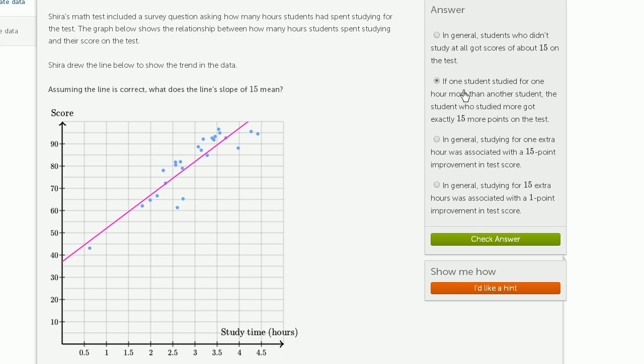If one student studied for 1 hour more than another student, the student who studied more got exactly 15 more points on the test. This is getting closer to the spirit of what the slope means, but the word exactly is what messes this choice up. This isn't saying it's guaranteed that if you study an hour extra you'll get 15% more on the test. This is just the general trend that this line is seeing, so it's not guaranteed.